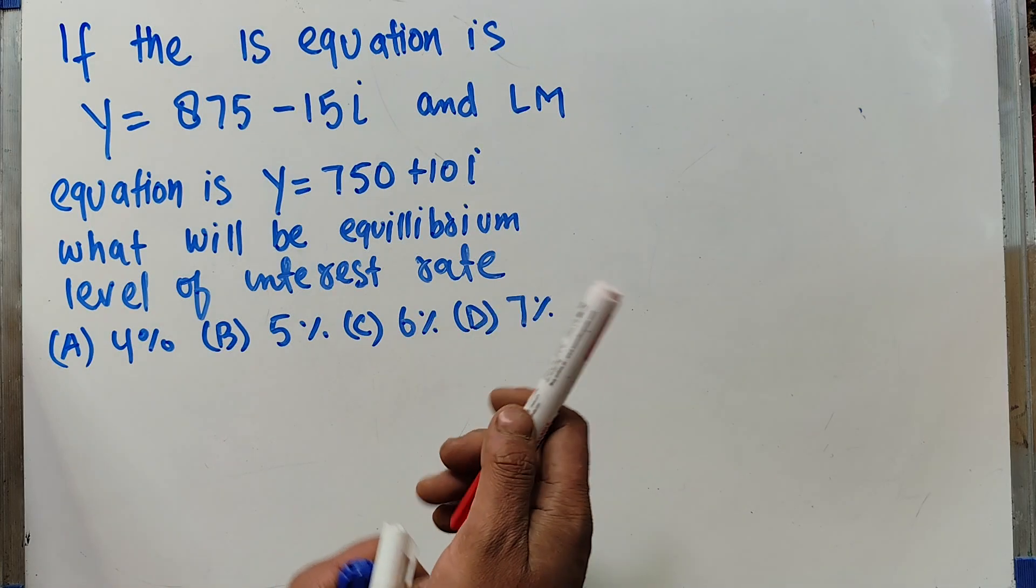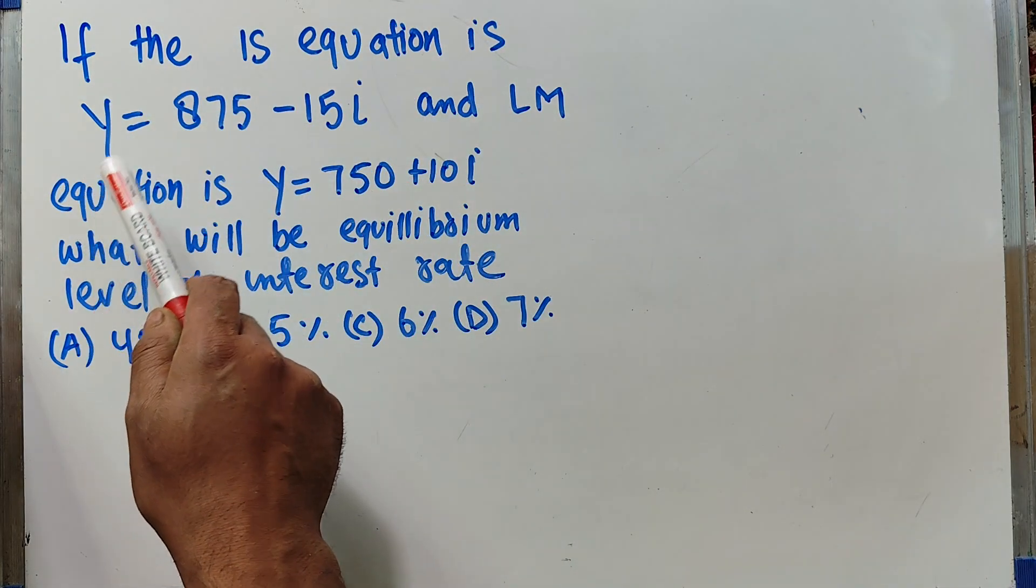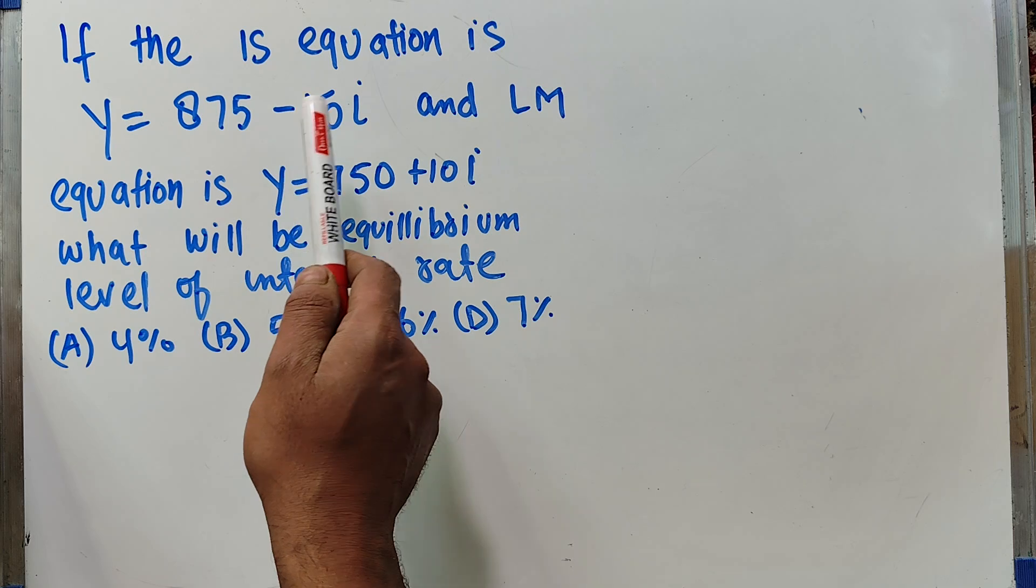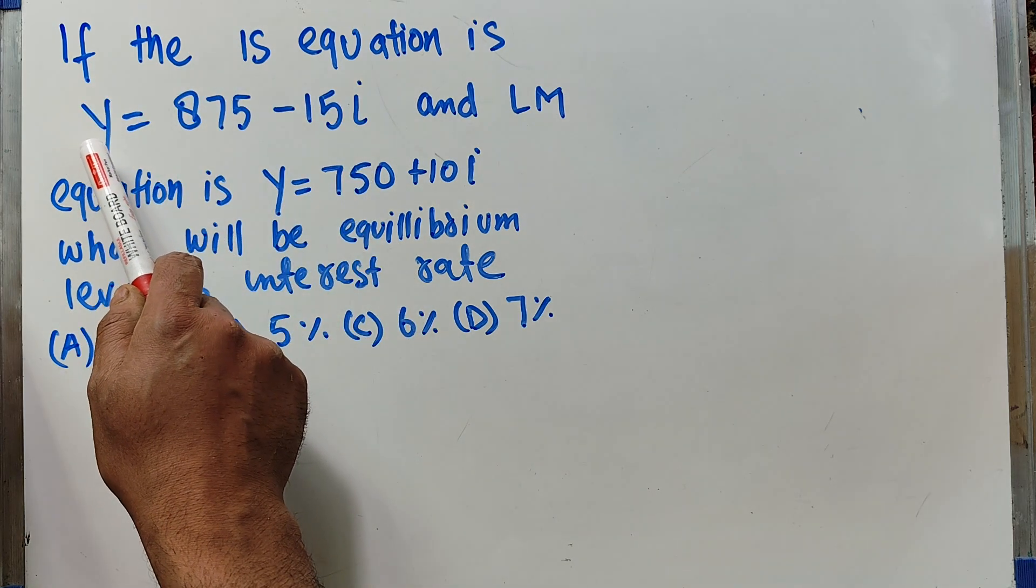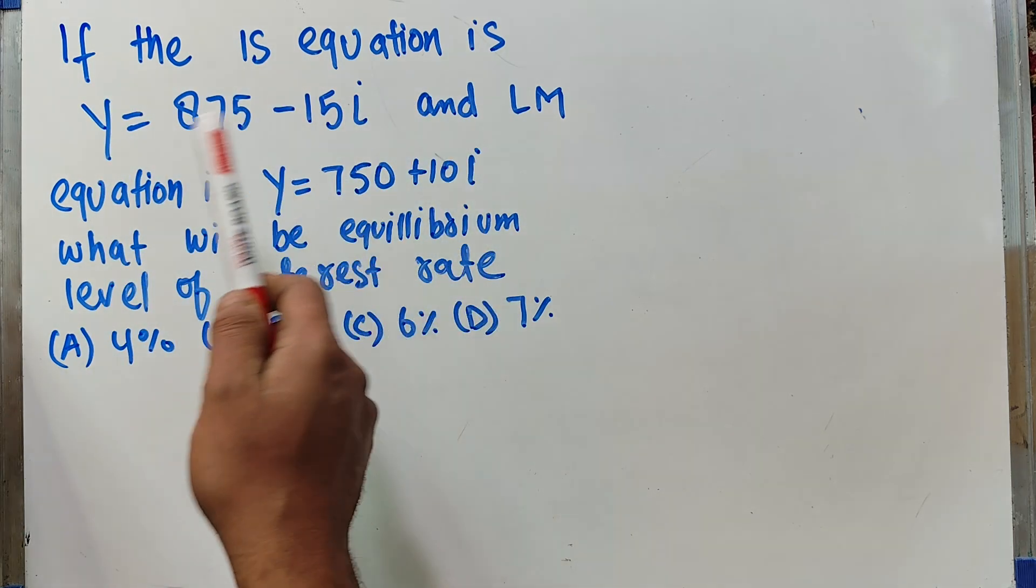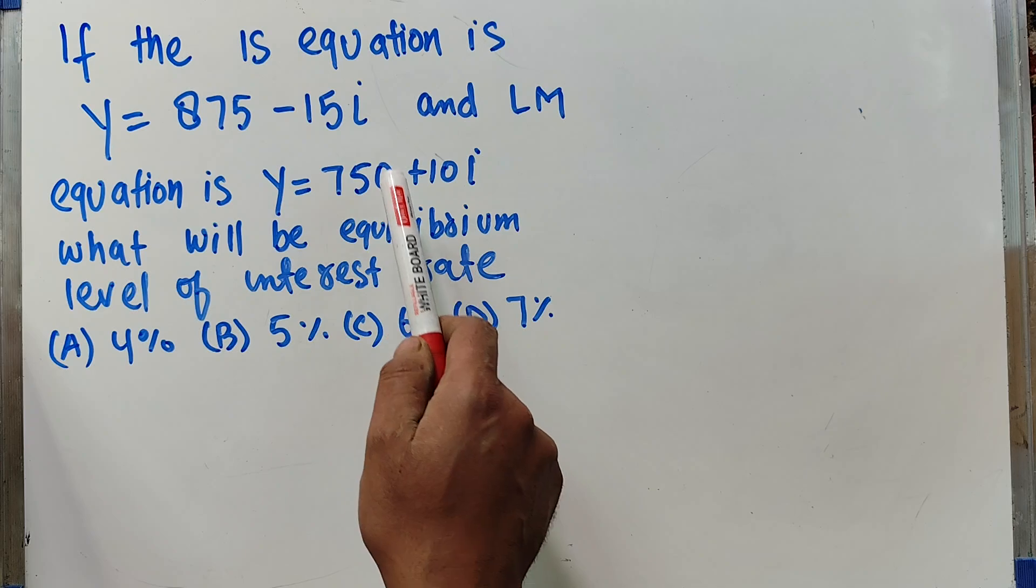Let us solve a question on IS-LM model. The IS equation is Y = 875 - 15I, where Y denotes income and I is the rate of interest. The LM equation is Y = 750 + 10I.